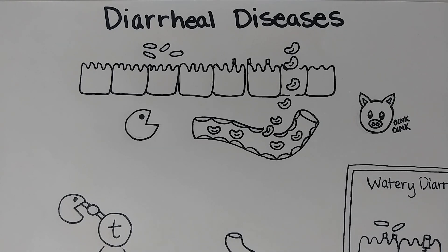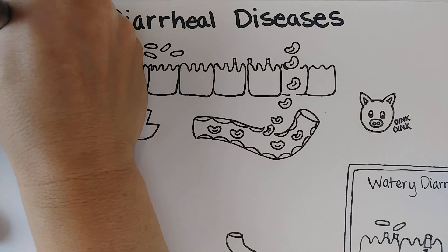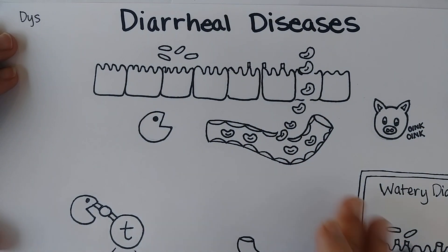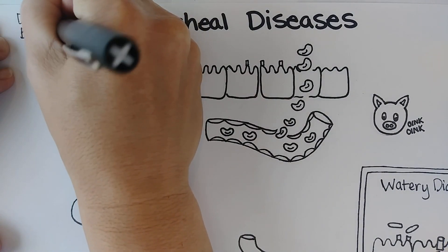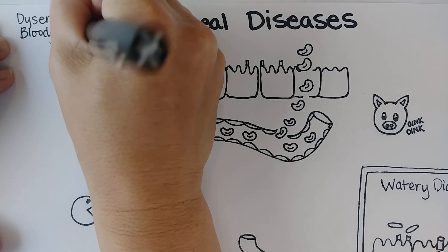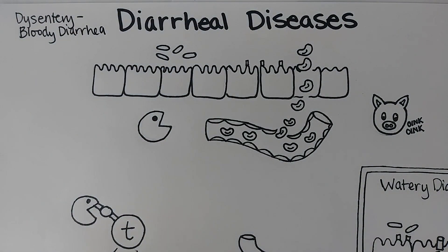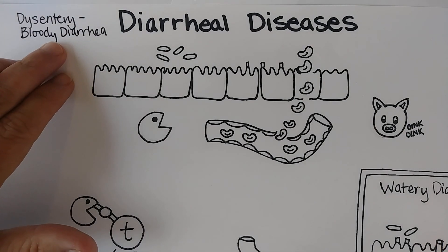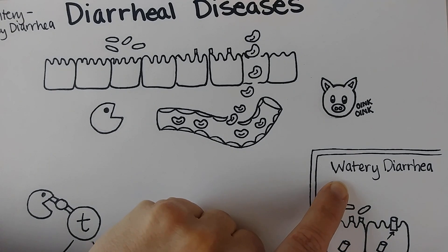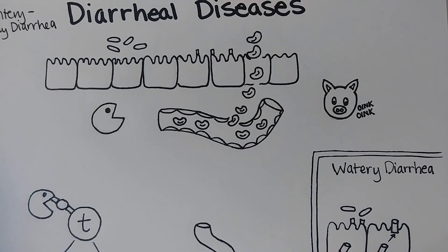Welcome to this video on diarrheal diseases. In this video I'd like to explain the differences between dysentery, which is bloody diarrhea, and watery diarrhea, as far as a couple of the bacteria that can cause these diseases. Dysentery is bloody diarrhea that usually presents with a fever, and watery diarrhea typically doesn't have as much of a fever, if at all, and no blood involved.